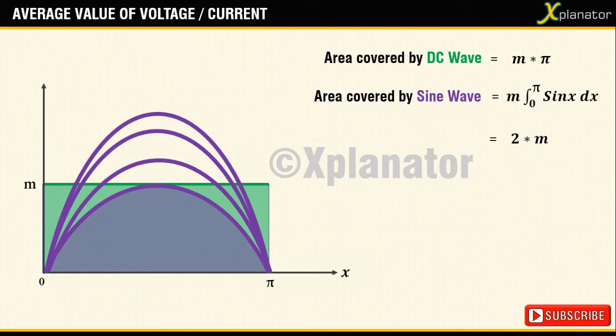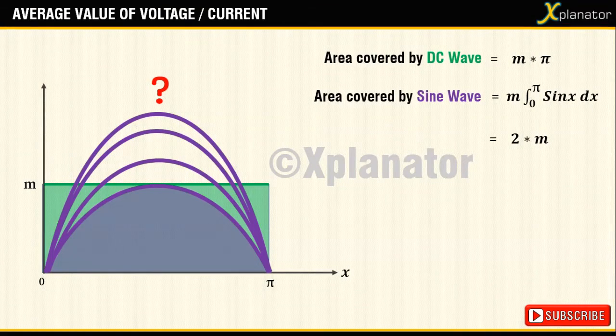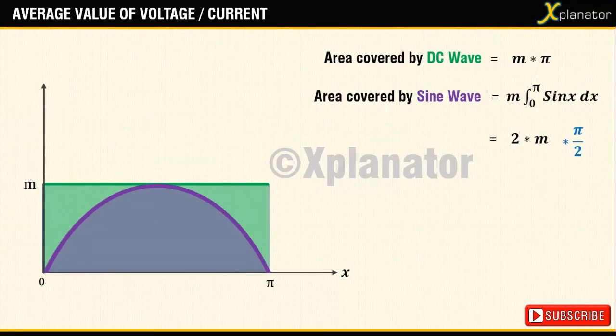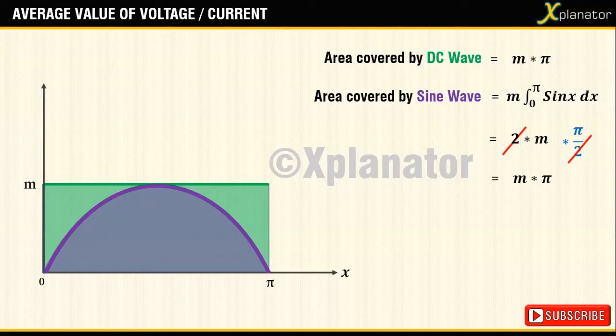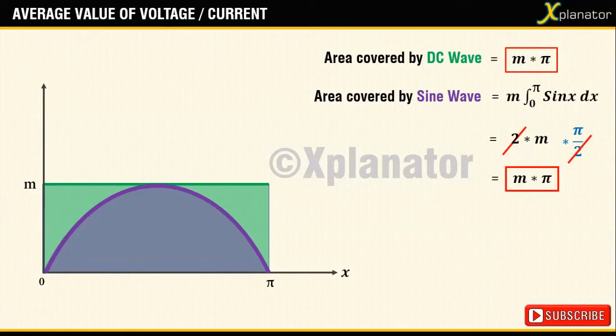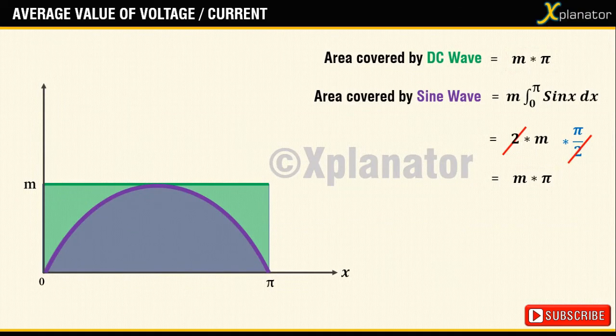But to what extent do we increase the magnitude? Now if you observe the previous AC area if multiplied by pi by 2 then the 2 will cancel out from the numerator and denominator and we will get M x pi. This is exactly the area under the DC curve. It means the new magnitude of the AC wave has to be M x pi by 2 instead of the old value M.